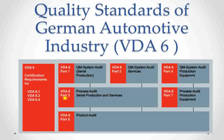As you can see, the upper three blocks have three VDA standards which talk about system audit: VDA 6.1 for QM system audit for serial production, VDA 6.2 for QM system audit for services, and VDA 6.4 for QM system audit for production equipment. The middle block has two standards for process audit: VDA 6.3 for process audit for serial production and services, and VDA 6.7 for process audit for production equipment. VDA 6.5 in the lower block covers product audit.